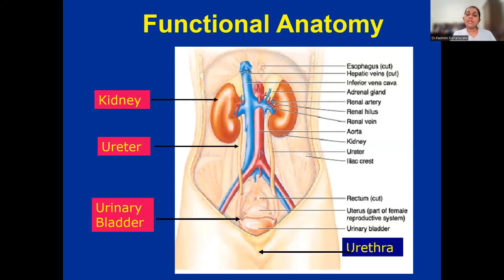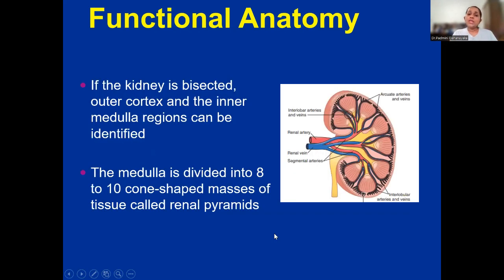A very brief overview. We have two kidneys, and these two kidneys drain by the two ureters into the urinary bladder. Ultimately, from the urinary bladder, the urine which is formed from the kidneys will be emptied outside of the body through the ureter. Now, if the kidney is bisected longitudinally, you can clearly identify two zones: the outer cortex as well as the inner medulla.